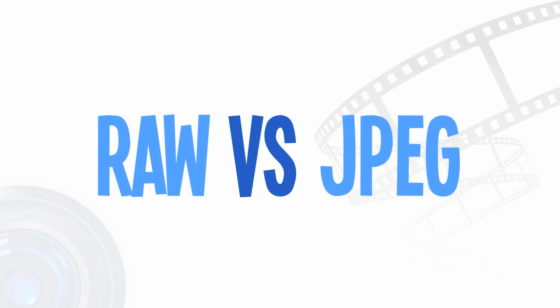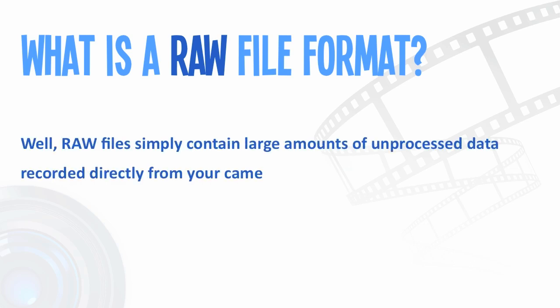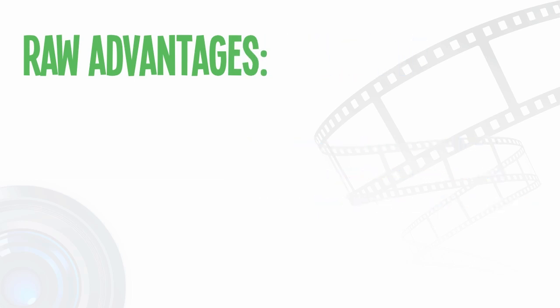So what actually is a RAW file format? RAW files simply contain large amounts of unprocessed data recorded directly from your camera's sensor. In this sense, it is the digital equivalent to a film negative that has been exposed but has yet to be processed. The primary advantage of shooting in RAW is that it gives the photographer complete control over how their photos are processed — essentially any aspect or nuance of an image.